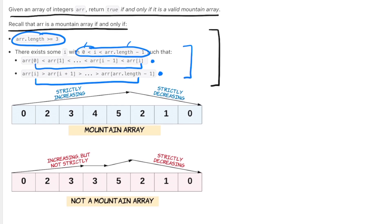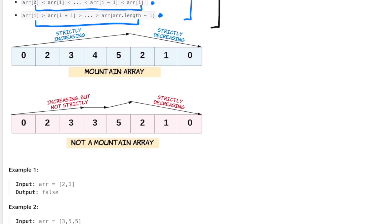They give us a few drawings to illustrate this idea. In the first drawing, we have a valid mountain array. From the start to 5, the array is strictly increasing, and then from 5 to the end, it's strictly decreasing. In the second drawing, the left side is not strictly increasing. Remember, to be strictly increasing, every element must be bigger than the previous one — but here 3 is not bigger than 3, so we return false.